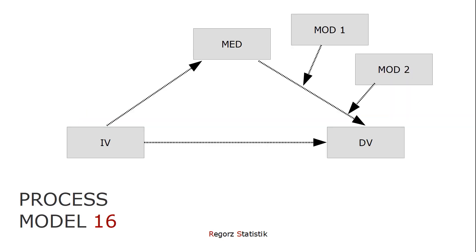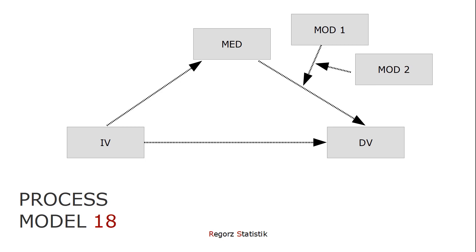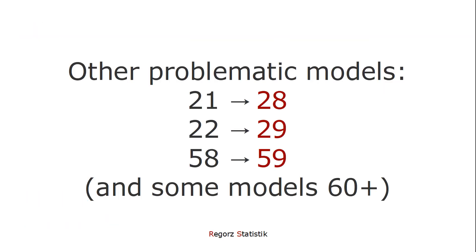Some other problematic models: model 16, where two moderators moderate the B path, can lead to the same bias — instead use process model 17, where the two moderators also moderate the C prime path. Model 18, a moderated moderation of the B path, is also problematic — instead use process model 19. Other problematic model numbers: 21 — better use 28; 22 is problematic — better use 29; 58 is problematic — better use 59. And there are some models in the 60-plus range that are quite rarely used.